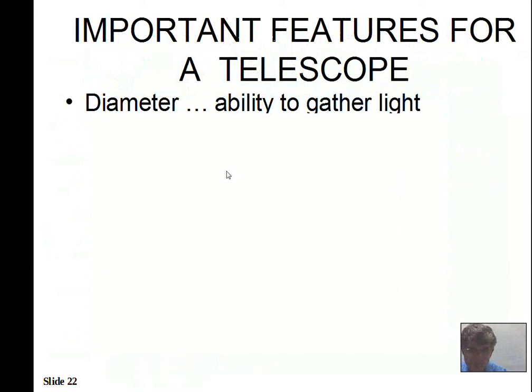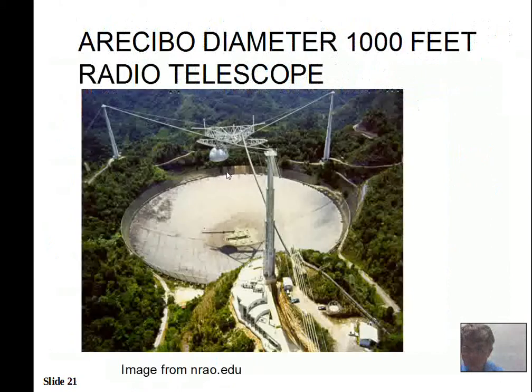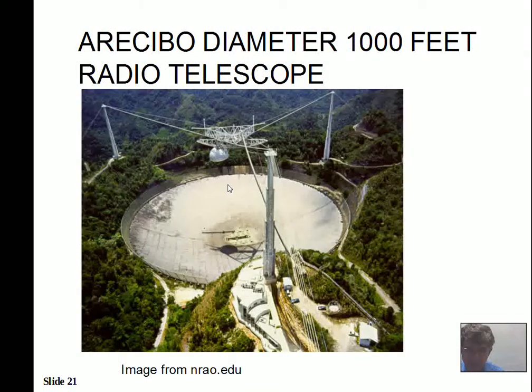In summary: reflecting telescopes use a mirror, refracting telescopes use a lens to gather light. We build telescopes to gather light and see dimmer objects. Galileo used the telescope very effectively to study the universe and publicized his work. We can compensate for atmospheric twinkling with adaptive optics.